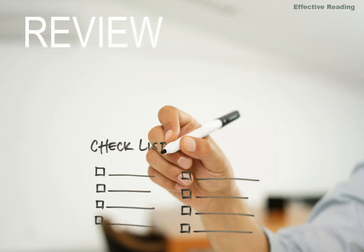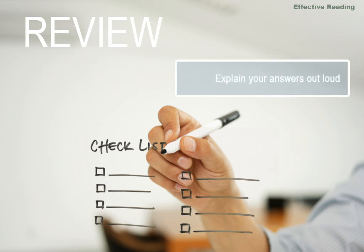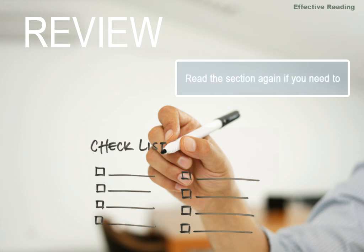After you finish a few sections, look at your questions and try to answer them. Can you? Explain the answers to yourself out loud — this will help to reinforce those associations you made in the recite stage. If you had trouble, feel free to consult your notes, or even go back and read the section again until you are confident that you know the information.